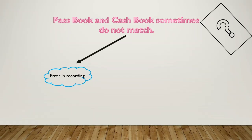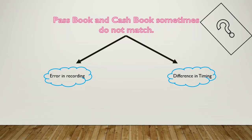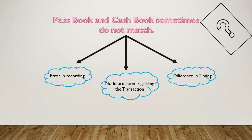Another reason of mismatch is difference in timing. For example, when we deposit a check in the bank, we immediately debit the Cash Book with the amount of the check. But it takes time for the bank to deposit the check in the account, and if we check the balance of Passbook and Bank Book during such period, there will be a mismatch. Yet another reason is no information regarding the transaction. For example, when the bank pays interest, it credits the Passbook, but we do not know about such interest until we check the Passbook. So we do not record it in the Bank Book, which results in a mismatch.